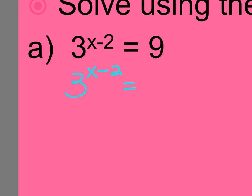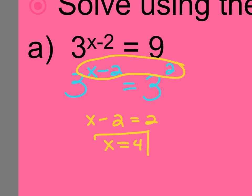So if 3 to the x minus 2 equals 3 squared, once those bases are the same, I literally ignore them, set my exponents equal to each other, and solve for the variable. These are super easy to check. They should be quick too. Like if I take that 4 and plug it in, I get 3 to the 4 minus 2, which is 3 squared, and 3 squared is 9.